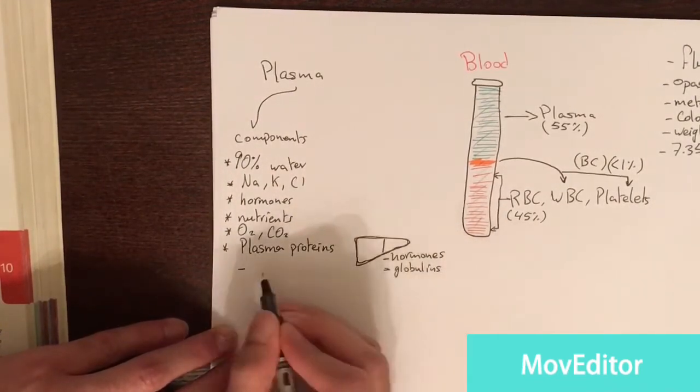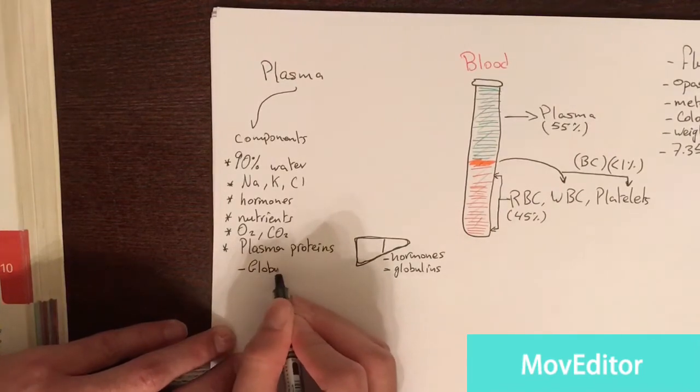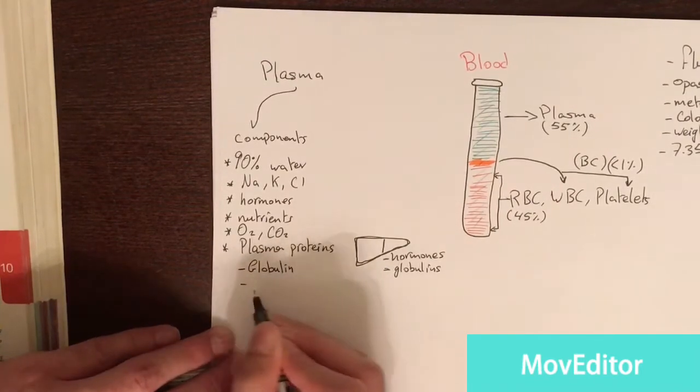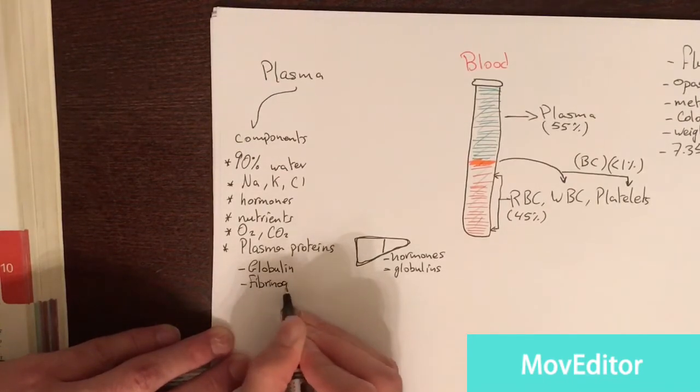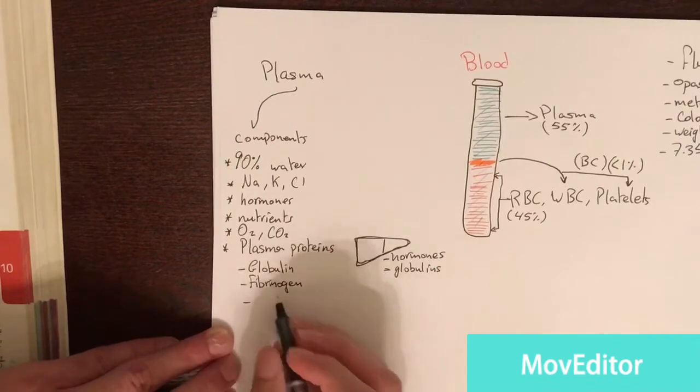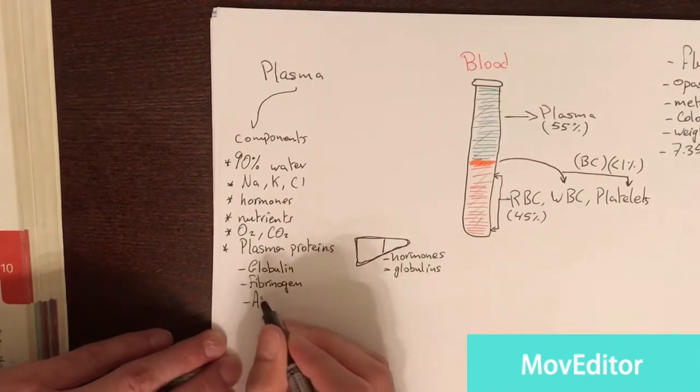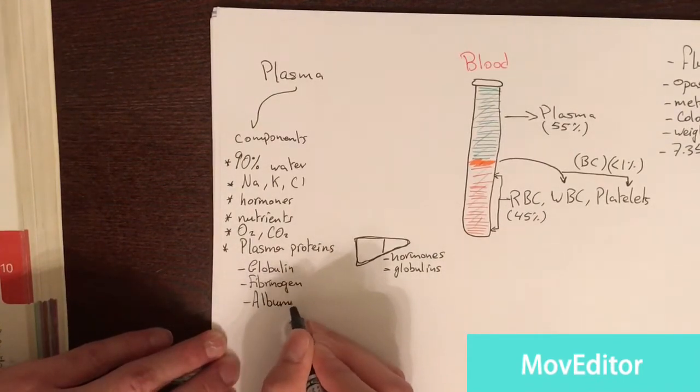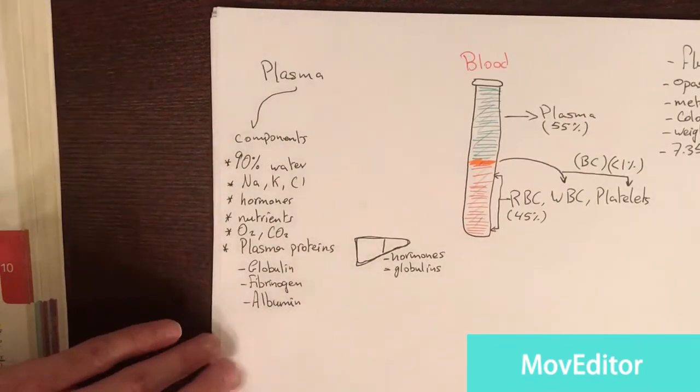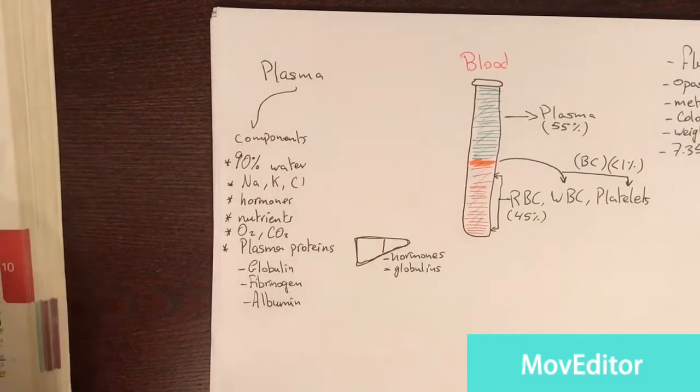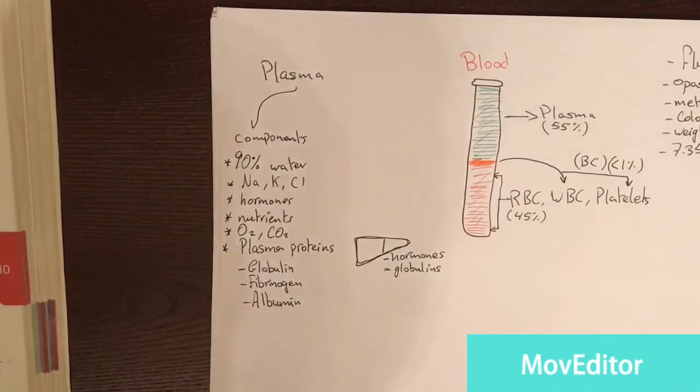The ones mentioned in the book is globulin, fibrinogen, and albumin. We'll start off with albumin because it is the most important one or they focused on it. The rest are important, of course, but the book focused on it.